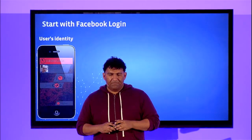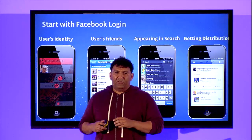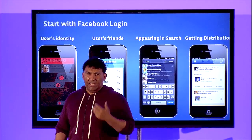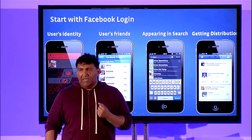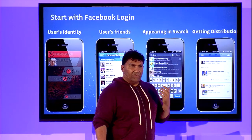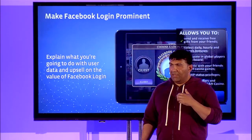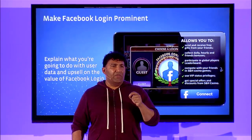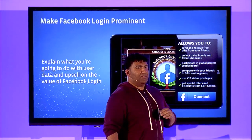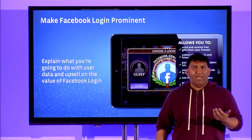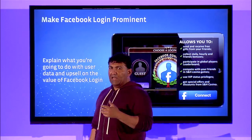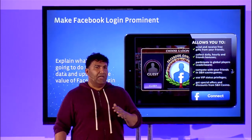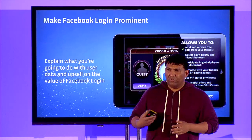You can see here using the native share sheet to do that. The first step in implementing all this is starting with Facebook Login. Facebook Login is your gateway to getting information about a user's identity, their friends, appearing in search if you're a game, and getting distribution via Open Graph. Once you've implemented Facebook Login, make it prominent inside your app, and most importantly, explain what you're going to do with the login information. Don't just put up a login dialog box and ask for a bunch of permissions — give users an understanding of what you're going to do with their data.